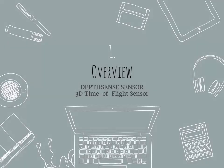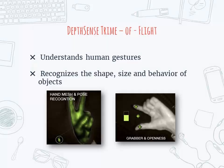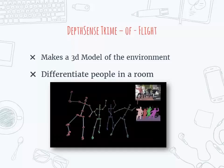Today I'm going to talk about the 3D time-of-flight sensor of Softkinetics. This depth sensor is smart enough to understand the most subtle of everyday human gestures and the shape, size and behavior of objects. It can also be used to create a 3D model of the environment and even recognize and differentiate several people in a room.